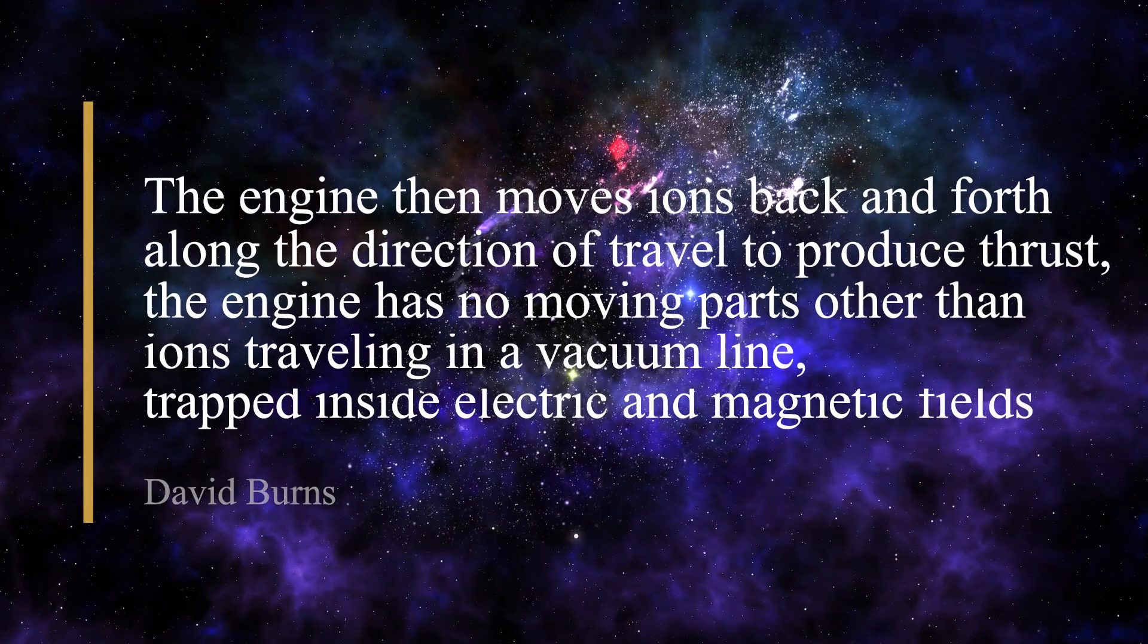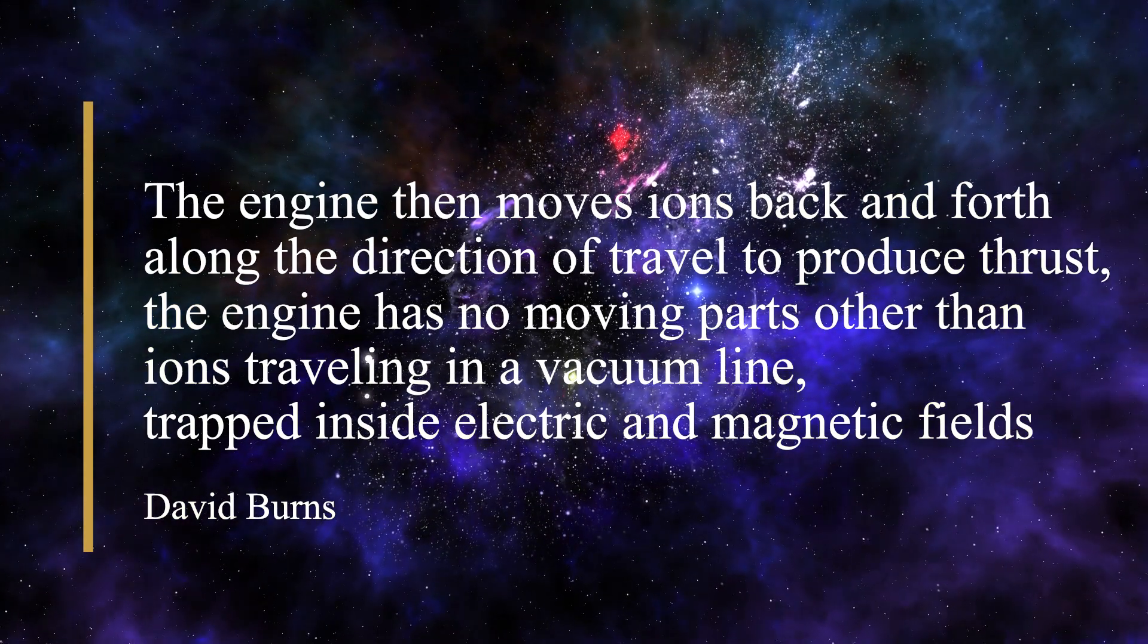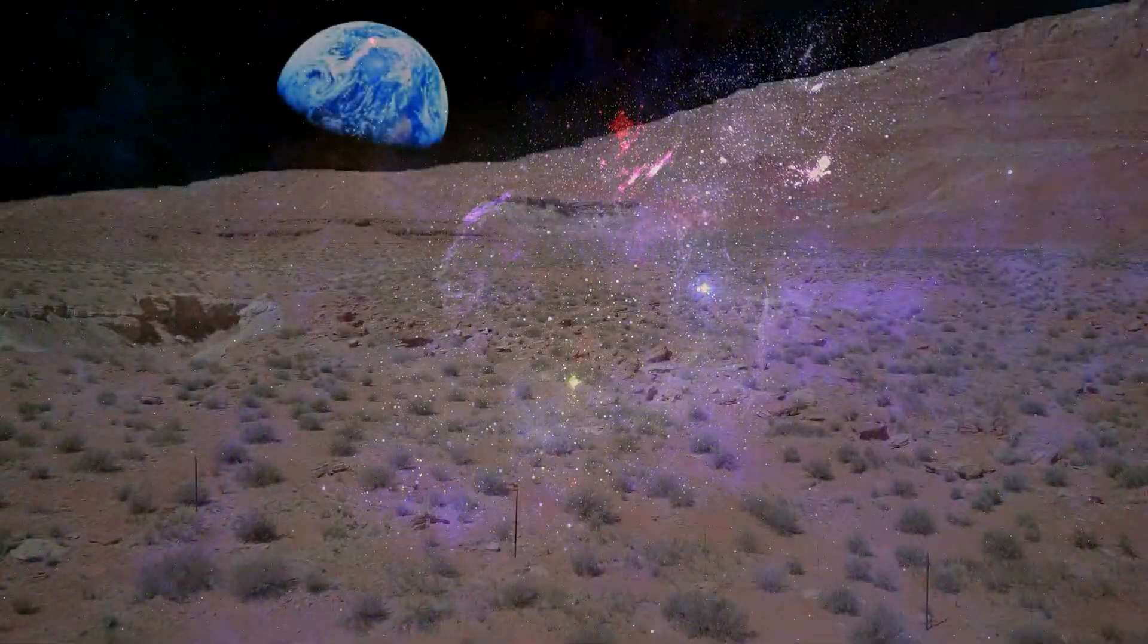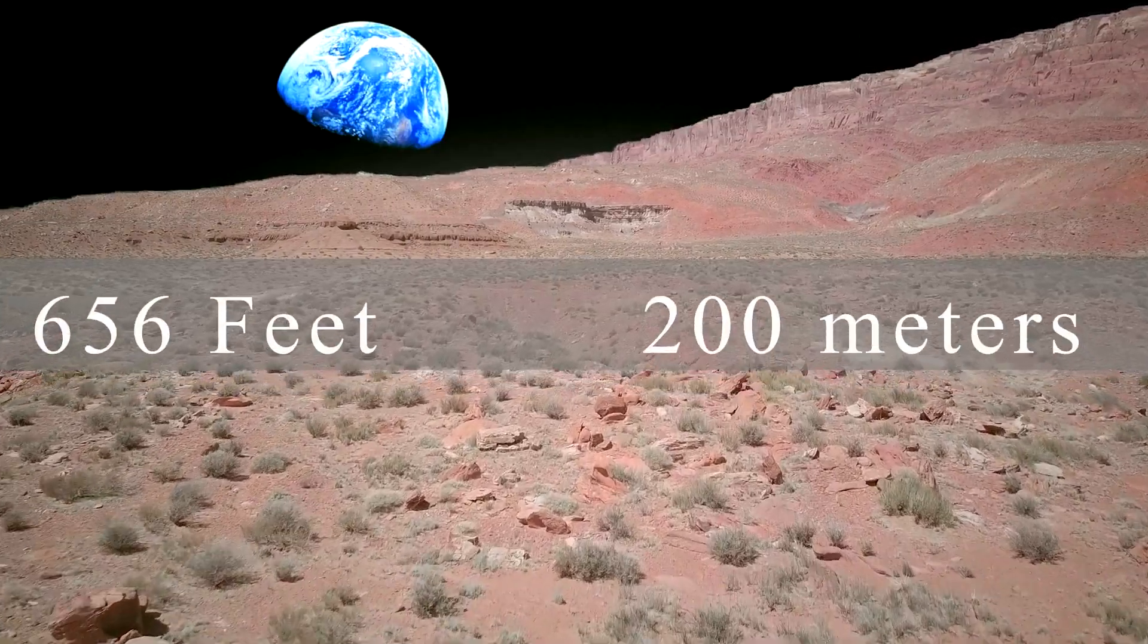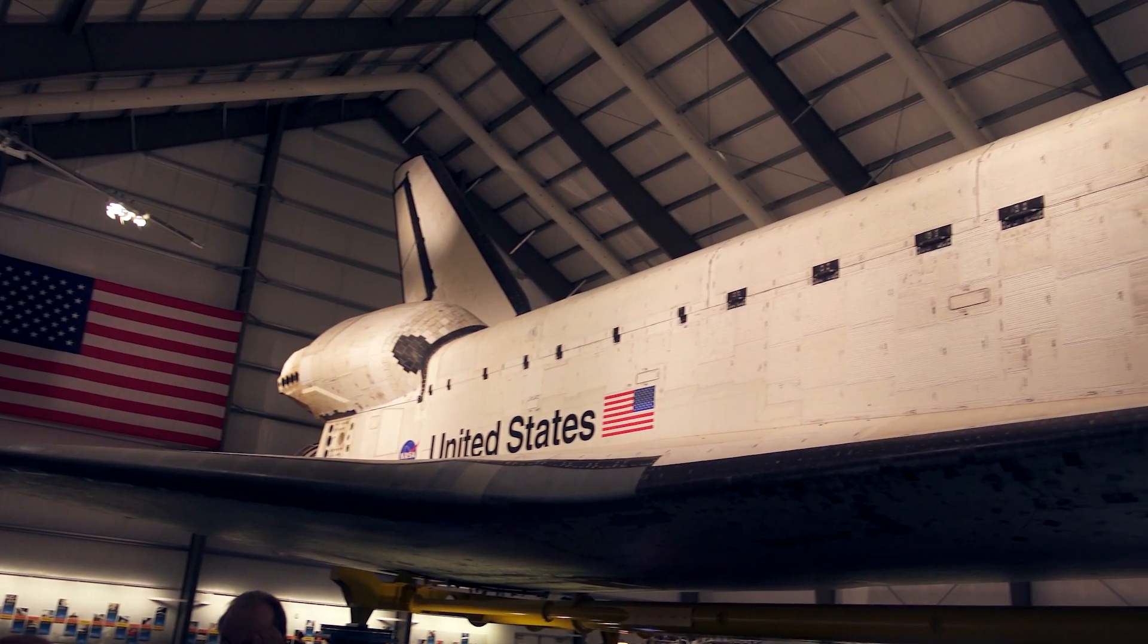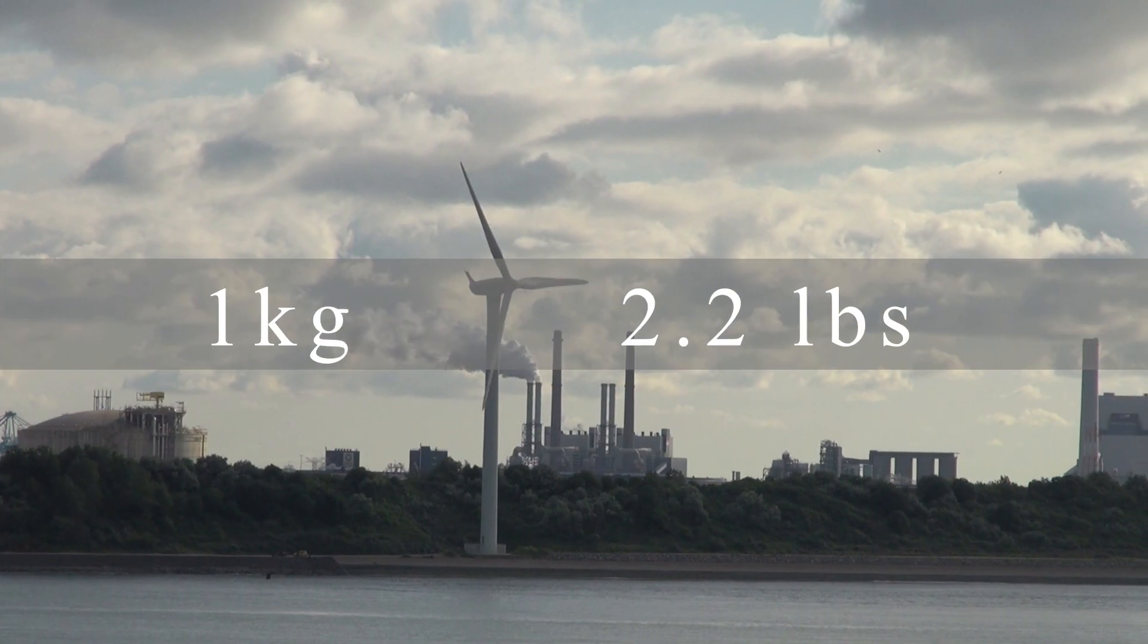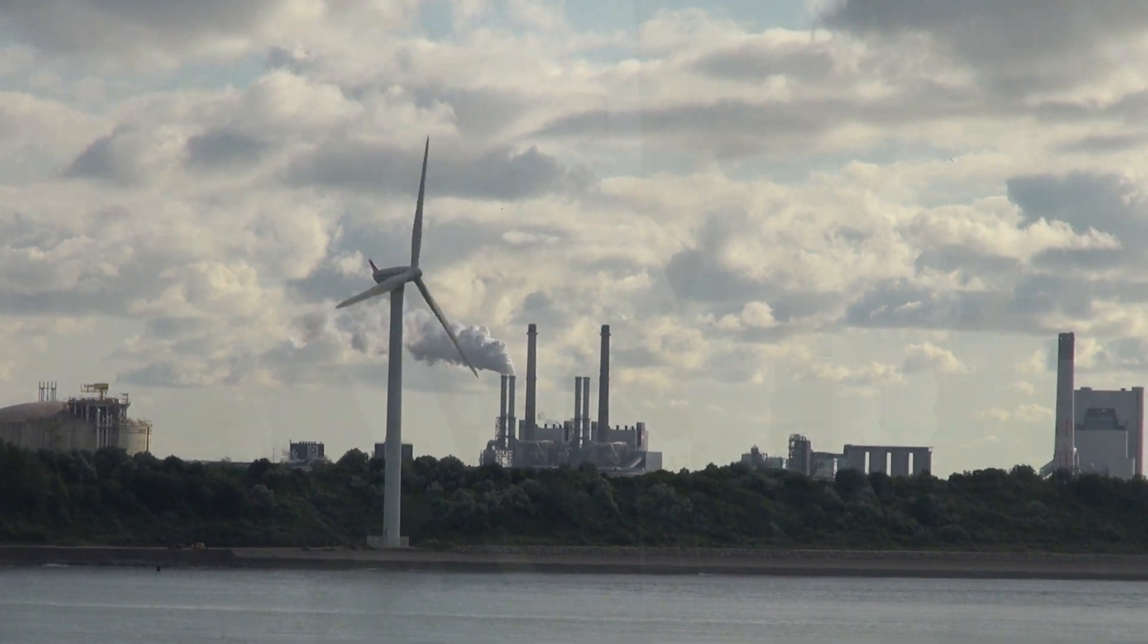Burns said, the engine then moves ions back and forth along the direction of travel to produce thrust, the engine has no moving parts other than ions traveling in a vacuum line, trapped inside electric and magnetic fields. The helical chamber would have to be very large. To be precise, it is about 656 feet and around 40 feet in diameter. To create one newton of force, 165 megawatts of energy would be required. That is the amount of force required to move a kilogram of mass per second, which is similar to the production of a power plant.